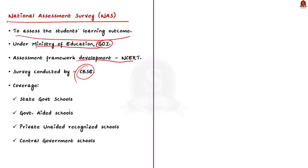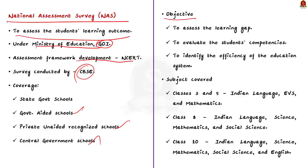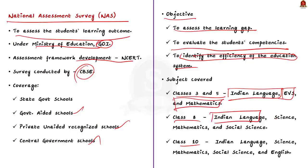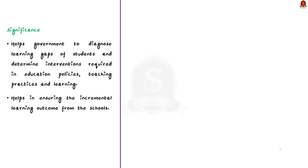The NAS covers state government schools, government-aided schools, private unaided recognized schools, and central government schools. Its objective is to assess the learning gap and evaluate student competencies, helping identify the efficiency of the education system. The targeted classes are 3, 5, 8, and 10. Subjects monitored include Indian language, environmental studies, and mathematics for classes 3 and 5; Indian language, mathematics, science, and social science for class 8; and English is additionally monitored for class 10.